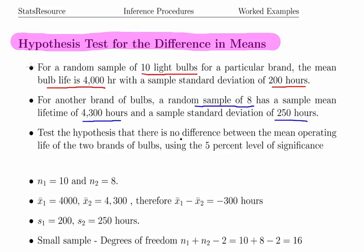Now test the hypothesis that there is no difference between the mean operating life of the two brands of bulbs using a 5% significance level.